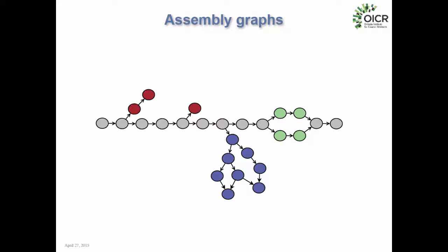Assemblers work with data in the form of a graph. An assembly graph is a specific type of graph which represents relationships between sequences. For example, each sequence read might be a vertex, and we connect two reads if they overlap — where the end of one sequence is the same as the start of another. This overlap relationship suggests the sequences are from adjacent positions in the genome, and the assembler traverses this graph to reconstruct the genome.